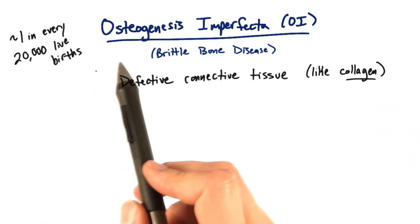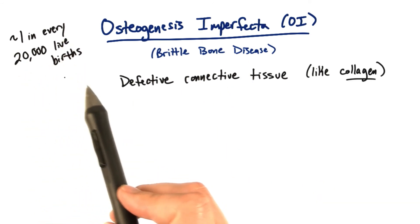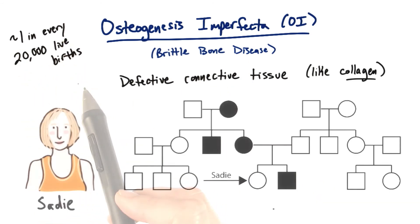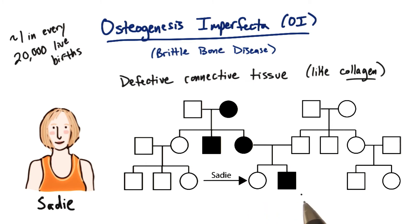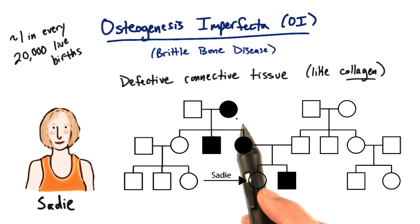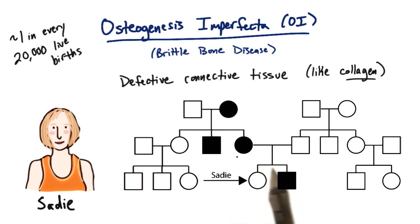The incidence of OI is about one in every 20,000 live births. Let's take a look at our fictional individual, Sadie, who has a European-American background. Here is a fictional pedigree of Sadie's family. We see that Sadie is not affected by OI, but her brother, her mother, her maternal uncle, and her maternal grandmother are all affected by osteogenesis imperfecta.